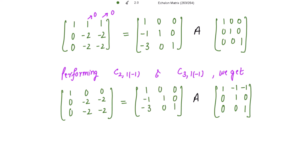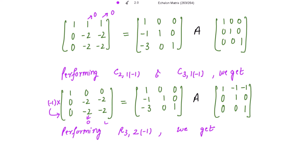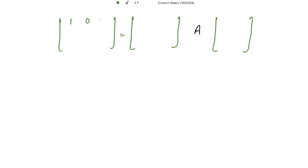Now we need to get 0 in place of −2 in row 3. We apply a row operation: multiply row 2 by −1 and add to the last row. So row 3 is changed to 0, 0, 0 in matrix A, and the corresponding left matrix row becomes −2, −1, 1. The first and second rows are written as they are. The remaining right-hand matrix is written as it is.